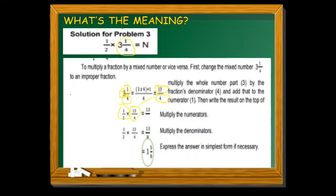Now that we have an improper fraction, we multiply: multiply the numerators — 13 times 1 equals 13 — then multiply the denominators — 2 times 4 equals 8 — giving thirteen-over-eight. Since the numerator is larger than the denominator, this is an improper fraction and we need to express it in simplest form.